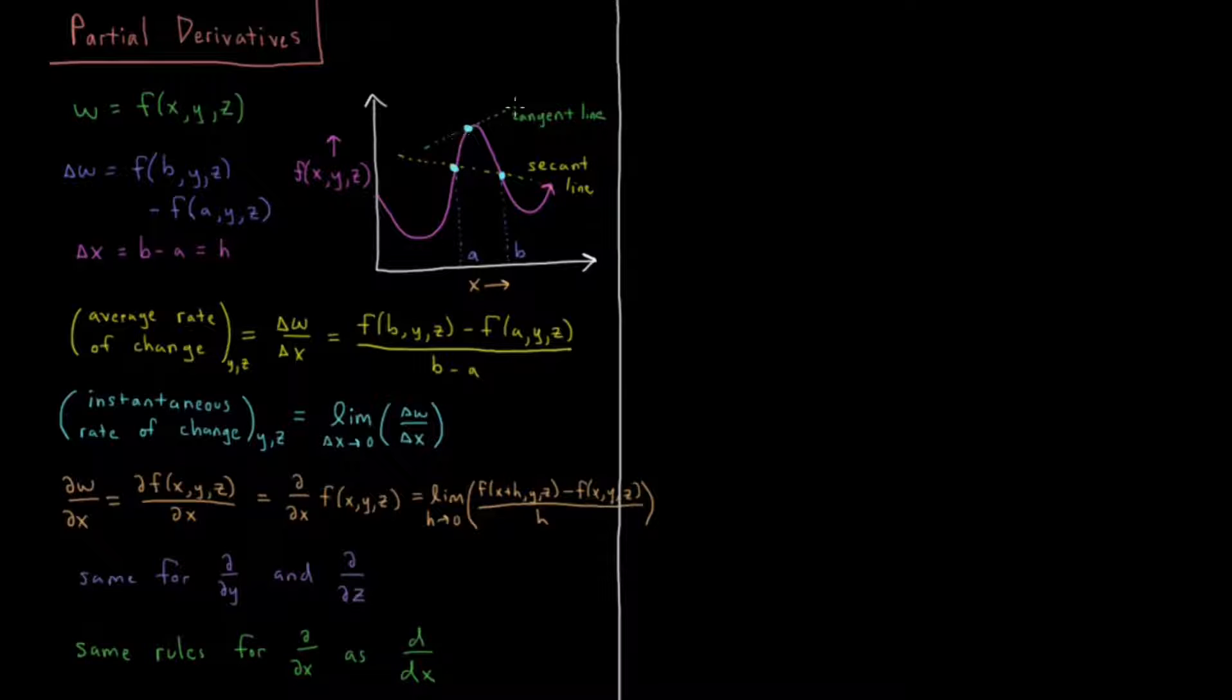So if I have a tangent line to the function, a function that touches the line only at one point, I have the instantaneous rate of change by the slope of the tangent line. So the instantaneous rate of change, and now with the caveat of saying that it's at a constant y and z, is equal to the limit as delta x goes to zero of delta w over delta x. In this case, it's a three-dimensional function.